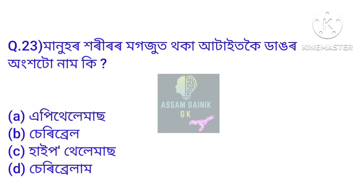Question number 23. Manuhar horirar moghozutthaka ataitkoe daangor onkhotu naam ki — what is the name of the largest part of the human brain? The answer is Cerebrum. Option number B.